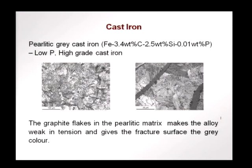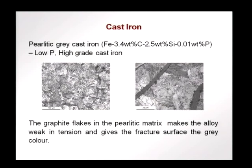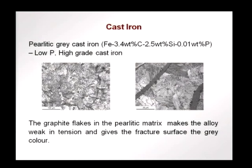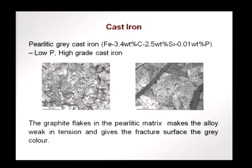These are pictures of pearlitic grey cast iron with about 3.4% of carbon and low phosphorus — this is called high-grade cast iron. The zoomed image shows a zebra-type structure: the matrix is pearlite and the dark parts are the graphite flakes. These graphite flakes are defects through which cracks can run. Graphite has not very high strength between its sheets and the crack can run very easily through it. So this becomes an inherent defect in cast iron.